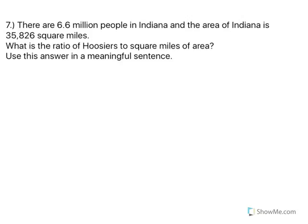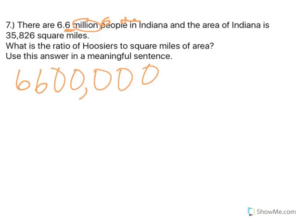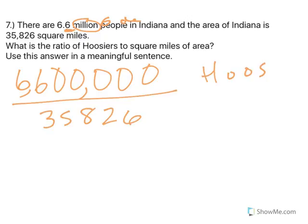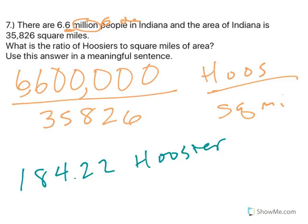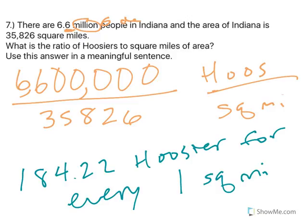All right, in 7, there are 6.6 million people in Indiana and the area is 35,826 square miles. What is the ratio of Hoosiers to square miles of area? So Hoosiers on top, well 6.6 million. Million means six decimal places. So I'm going to go six places. This six is one pass. So one, two, three, four, five, six. That is 6.6 million over 35,826, right? Because we've got Hoosiers over square miles. That's what we're doing. Now, again, that's a huge fraction. It means nothing. Let's go ahead and divide that. If we divide it, we get 184.22. So that's how many Hoosiers for every one square mile of area. Because when you divide, that puts the number over one.